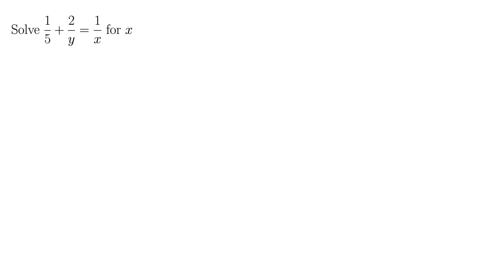In this example, we're asked to solve 1 over 5 plus 2 over y equals 1 over x for x. So we're trying to solve for x here. You want to keep that in mind as you go about all the steps to solve this thing. What we have here is a rational equation, so let's bring up the steps to solve a rational equation.